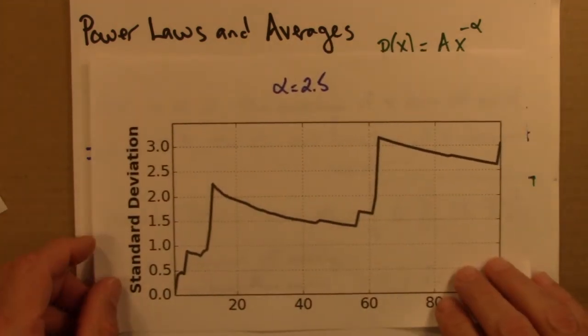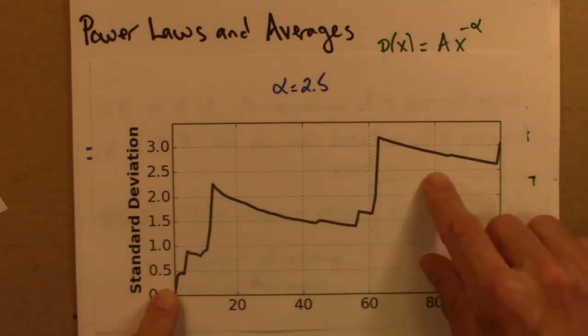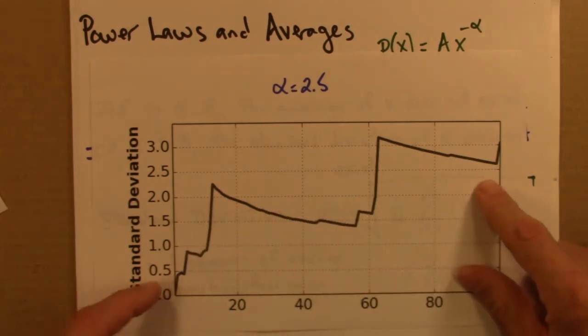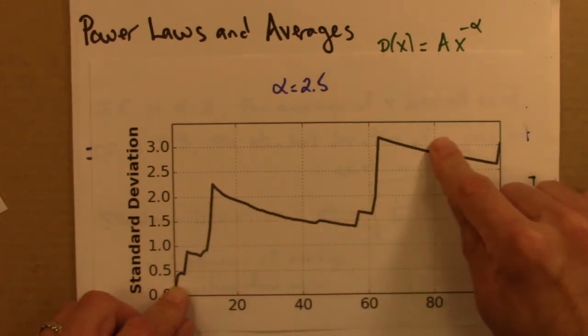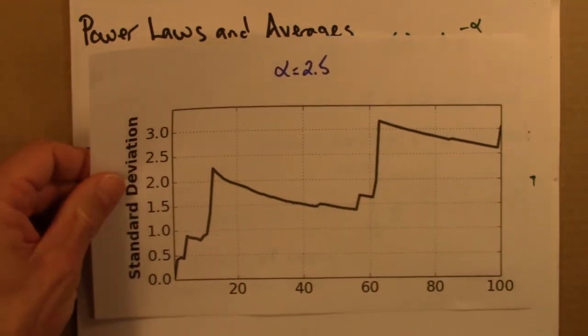So here, I'm plotting now, not the average, but the standard deviation. How much do the values tend to fluctuate around the mean? And we're seeing these spikes, big spikes, bigger than before. That's out to 100.